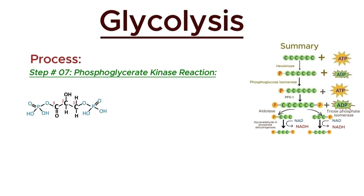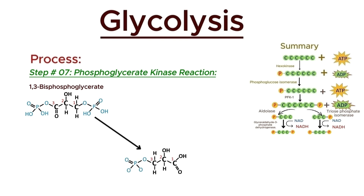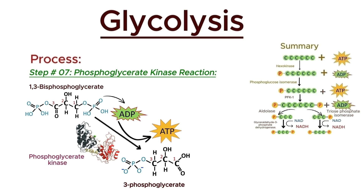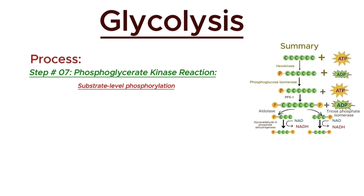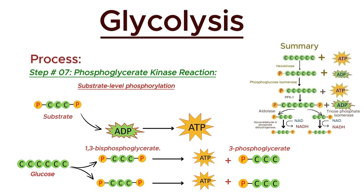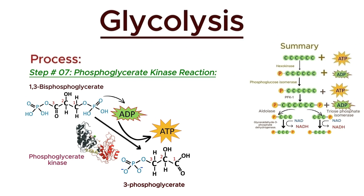In the next step, 1,3-bisphosphoglycerate is converted into 3-phosphoglycerate. This reaction is catalyzed by the enzyme phosphoglycerate kinase. During this step, a phosphate group from 1,3-bisphosphoglycerate is transferred to ADP to form ATP — an example of substrate-level phosphorylation, where a phosphate group is directly transferred from a substrate molecule to ADP. This step produces 2 molecules of ATP for each glucose molecule, because each glucose molecule generates 2 molecules of 1,3-bisphosphoglycerate. At the end of this step, we obtain 2 molecules of 3-phosphoglycerate while generating ATP, catalyzed by phosphoglycerate kinase.